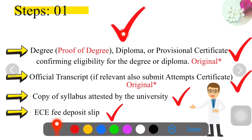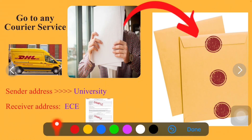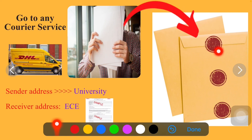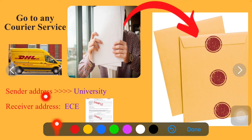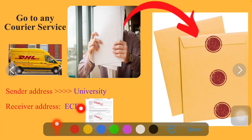Now you have all four documents: proof of degree, duplicate official transcript, copy of syllabus, and ECE fee deposit slip. There are two options for sending them to ECE. First, go to your university and ask them to send the documents to ECE directly. If your university refuses, take all your documents along with a university-stamped envelope to a courier service center. Put your documents in the envelope and seal it. For the sender address, it is better to mention your university address; for the recipient address, mention the ECE address shown on your fee slip.